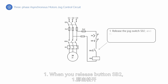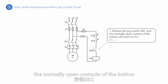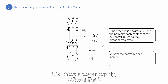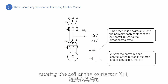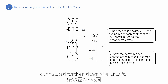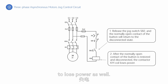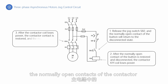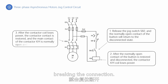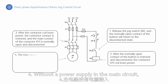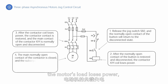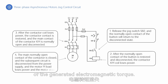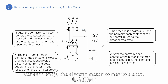When you release button SB2, the normally open contacts of the button return to their original position, opening the circuit. Without a power supply, the auxiliary circuit loses power, causing the coil of contactor KM to lose power as well. With the coil of the contactor de-energized, the normally open contacts of the contactor within the main circuit reset, breaking the connection. Without a power supply in the main circuit, the motor's load loses power, resulting in the dissipation of the generated electromagnetic torque, and consequently the electric motor comes to a stop.